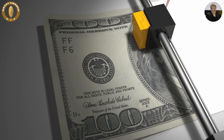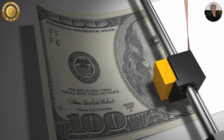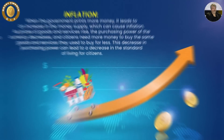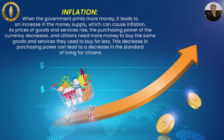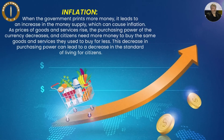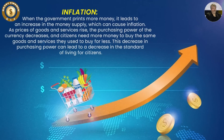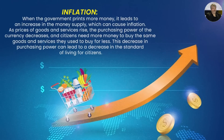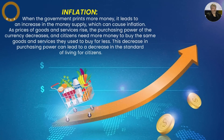Printing more money by the government can cause citizens to be poorer in several ways. First, inflation: when the government prints more money, it leads to an increase in the money supply, which can cause inflation. As prices of goods and services rise, the purchasing power of the currency decreases, and citizens need more money to buy the same goods and services they used to buy for less. This decrease in purchasing power can lead to a decrease in the standard of living for citizens.